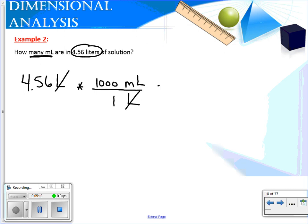So these cross out. And we're left with milliliters, which is what we're looking for. And so we say 4.56 times one thousand divided by one and you get four thousand five hundred and sixty milliliters. This has three significant digits. One, two, three significant digits.